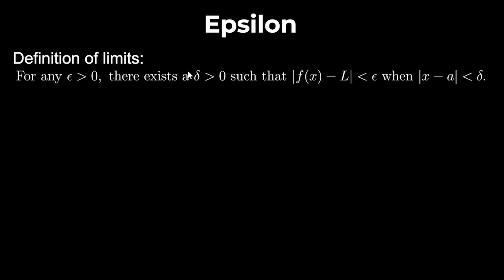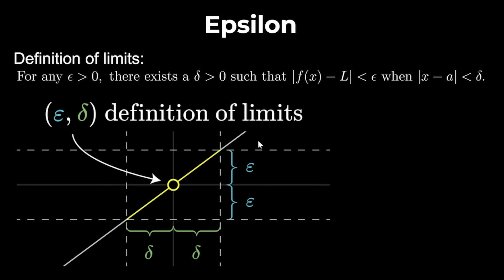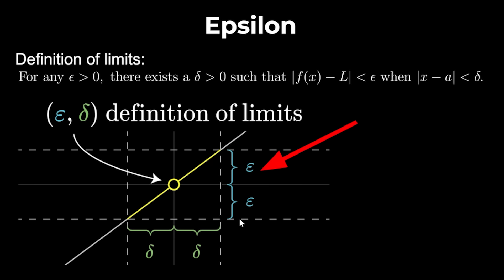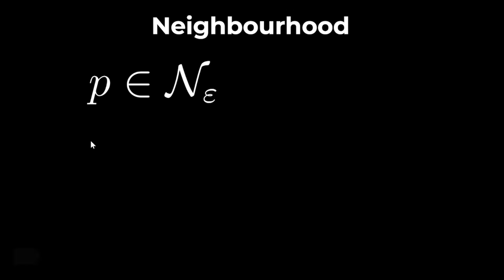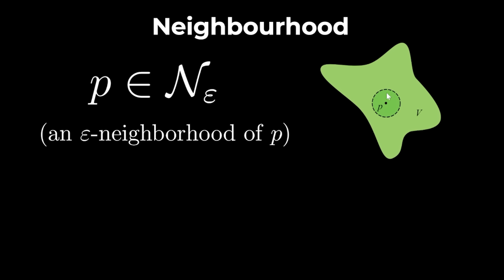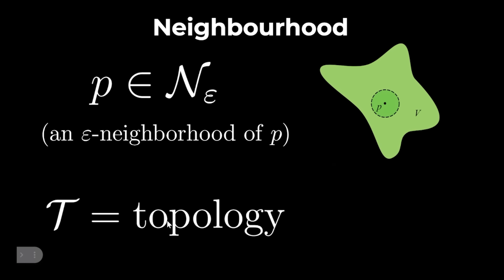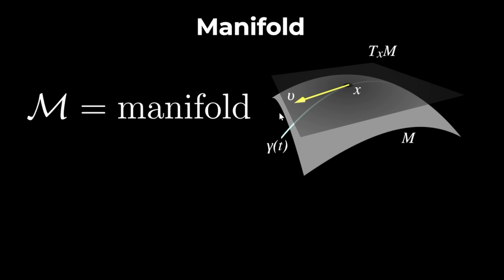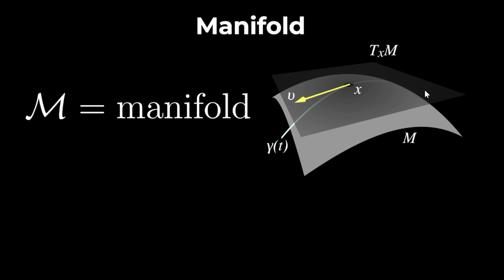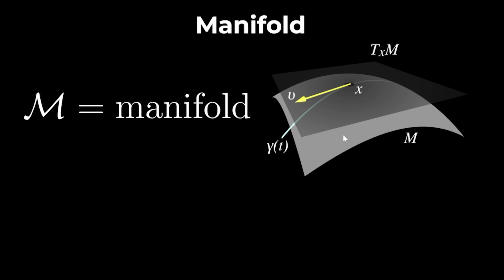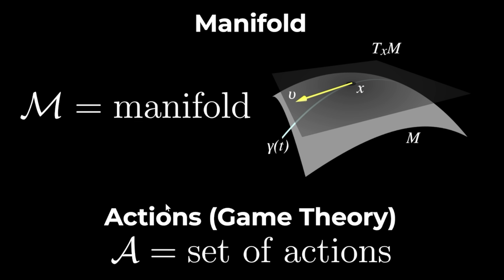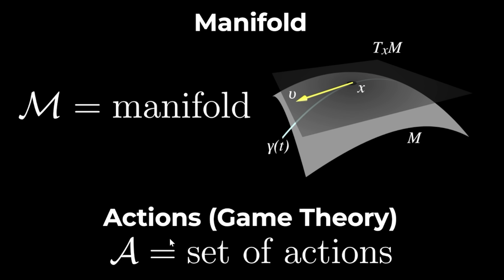In topology, curly N denotes the neighbourhood of a point P, which is a set containing all points close to P, and curly T represents a topology where a mug equals a doughnut. Curly M represents a manifold, which is a space that looks like regular Euclidean space locally but can have complex properties globally. In game theory, curly A represents the set of actions, decisions, or strategies available to a player.